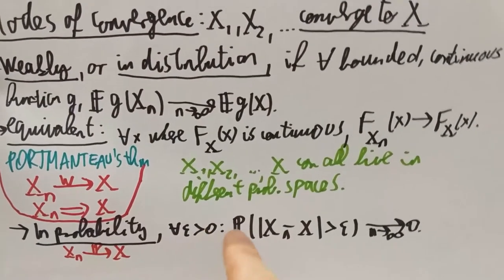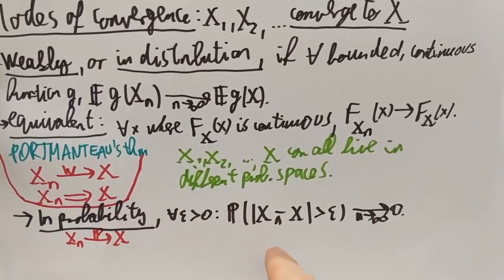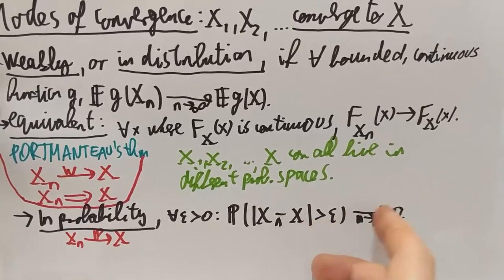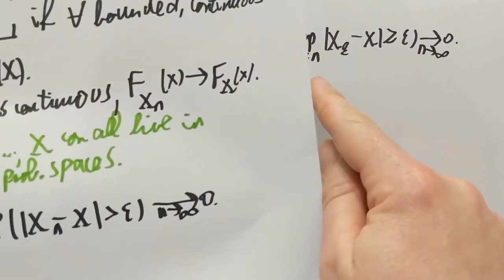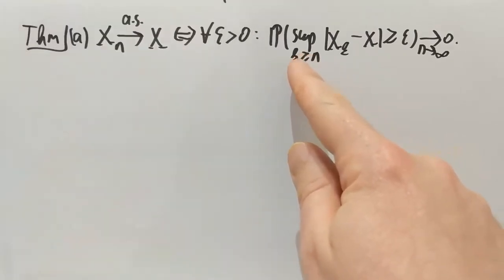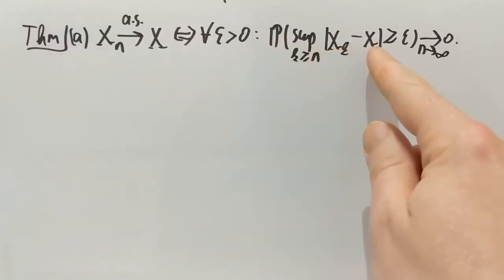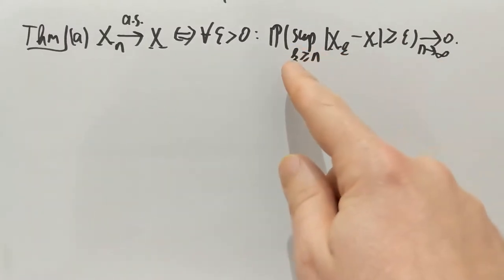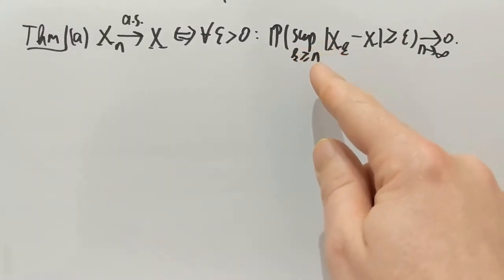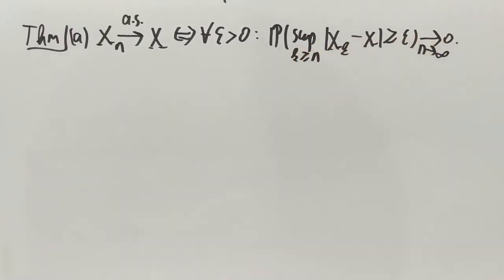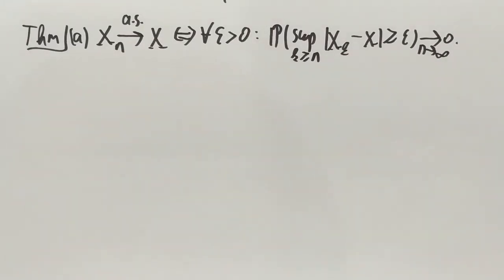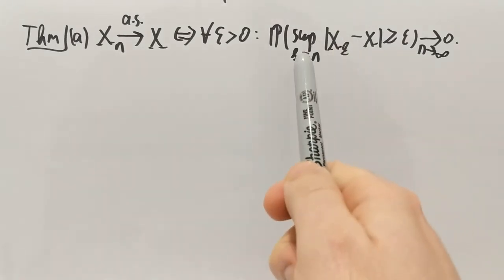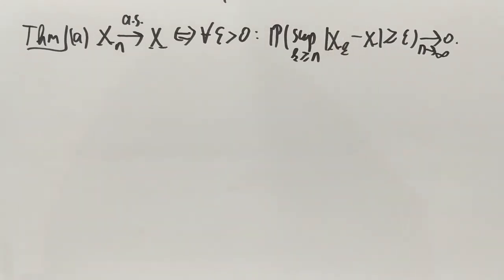Now before going further, let me compare this to the original definition of convergence in probability: for every epsilon, the probability that |xn minus x| is larger than epsilon goes to 0. The only change made here is to add in the supremum. So instead of probability that |xk minus x| is larger than epsilon, we have the supremum over k at least n. If that goes to 0, that's exactly the case for almost sure convergence. That's how you boost convergence in probability to almost sure — by adding in this supremum.